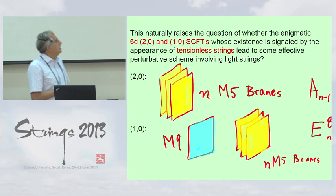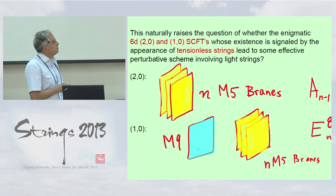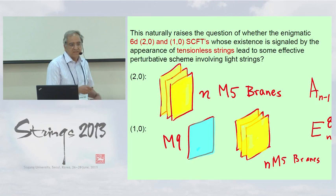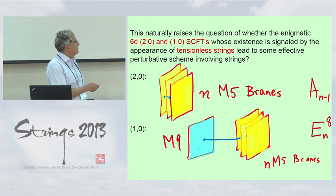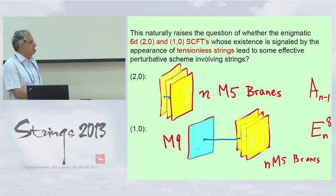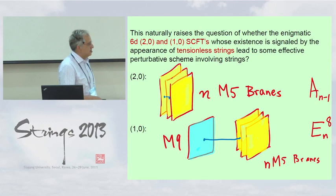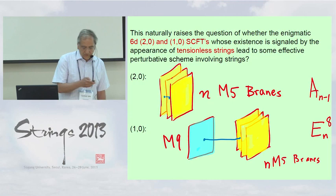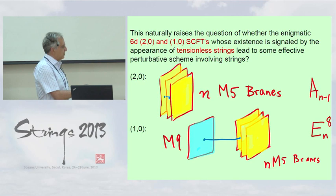This is a tough question I'm not going to be able to answer, but nevertheless I would like to study aspects of these tensionless strings — not quite at the tensionless limit, but at the limit where I separate slightly the corresponding objects. So we will have some kind of strings corresponding to M2 branes suspended between nearby M5 branes, or between an M5 brane and an M9 brane. In the first case we talk about the (N−1) (2,0) theory, and in the second case about the theory with E8 global symmetry in 6D.